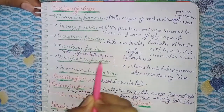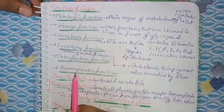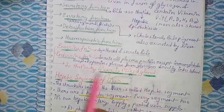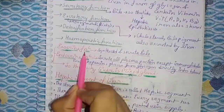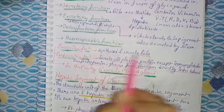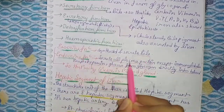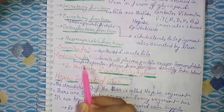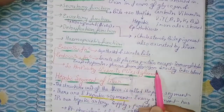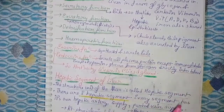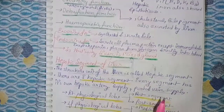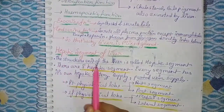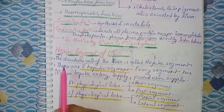Functions of the liver: metabolic function, storage function, secretory function, excretory function, detoxification function, and hemopoietic function. The liver is called a mixed gland because it has an exocrine function — synthesizing and secreting bile — and an endocrine function — secreting all plasma proteins except immunoglobulin, except heparin, and releasing glucose from glycogen directly into the blood.